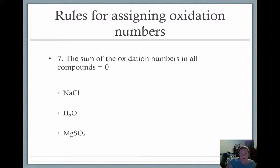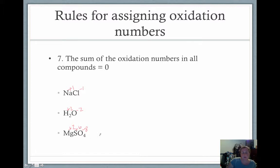The sum of all oxidation numbers in a compound must equal zero. For NaCl: sodium is plus one, chlorine is minus one, total charge is zero. For water: oxygen is minus two, hydrogen is plus one with two hydrogens giving plus two — totals zero. For MgSO₄: oxygen is minus two times four gives minus eight, magnesium is group two at plus two. So plus two and minus eight gives minus six, meaning sulfur must be plus six to bring the total to zero. Plus two plus six is plus eight, and minus eight brings us to zero.